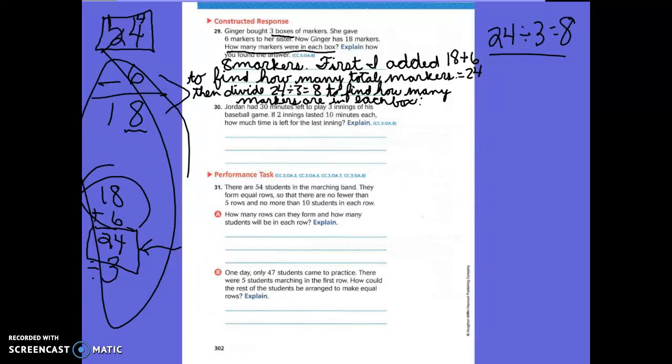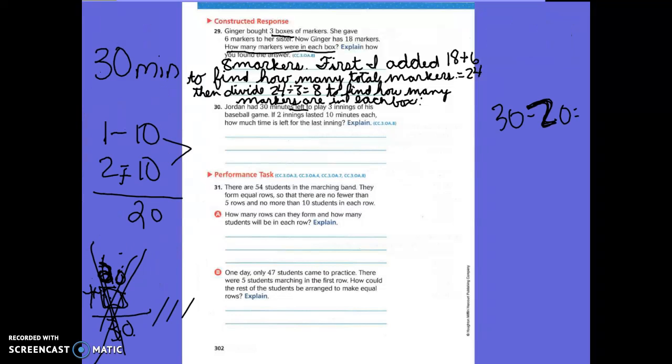Number 30. We are going to have to, on this problem, stop and talk about it instead of work it out up here together. So we're going to be working it out together, but it may not show on the video because we need to hurry up. Jordan had 30 minutes left to play innings of his baseball game. If two innings last 10 minutes each, how much time is left for the last inning? Explain. How much time is left for the last inning? 10 minutes.